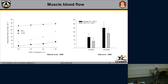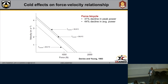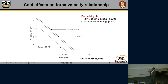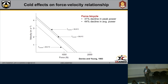Looking at cold effects on force-velocity, classic work from Davies and Young had individuals sit in cold water to decrease muscle temperatures, then had them work on a force bike, essentially showing a 31% decline in peak power as well as a very large decrease in average power. For any given force on the bicycle, as muscle temperature falls from around 37 down to about 28 degrees, you can see a shift to the left in this curve, so that at any given force you produce less velocity. Cold muscle is something we need to prevent if we want people to perform maximally.